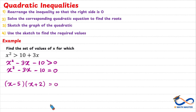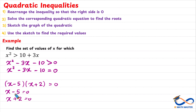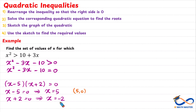Since the product is equal to 0, either x minus 5 equals 0, giving x equals positive 5, or x plus 2 equals 0, giving x equals negative 2. So the two roots are 5, 0 and negative 2, 0. As we know, at the roots or x-intercepts, y will always be 0.